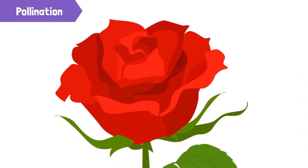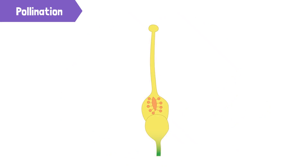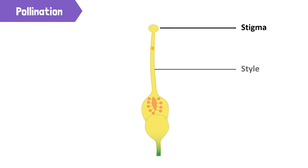This gets collected by the stigma. As soon as the pollen falls on the stigma of a flower, it starts to travel through the style. The pollen grains form a pollen tube that leads them to the ovary. The pollen grain combines with the ovule inside the ovary and forms a seed.